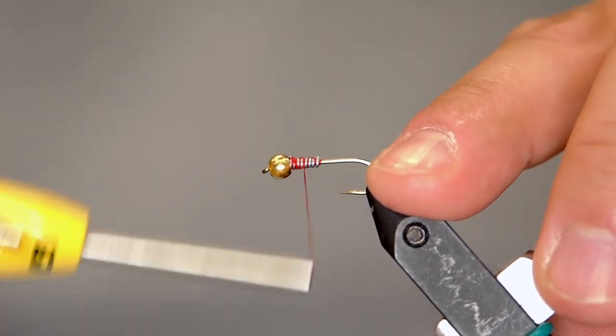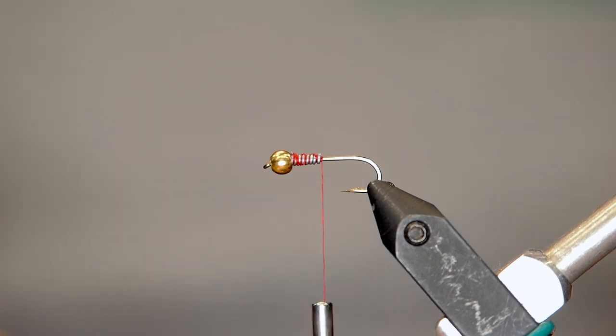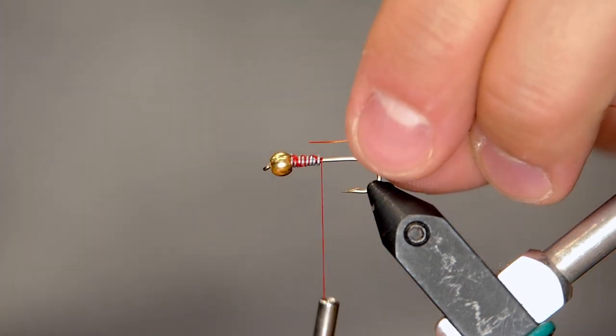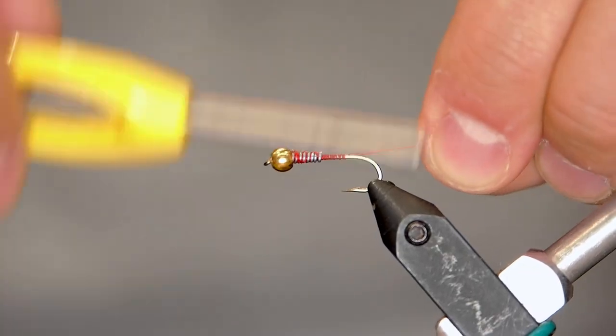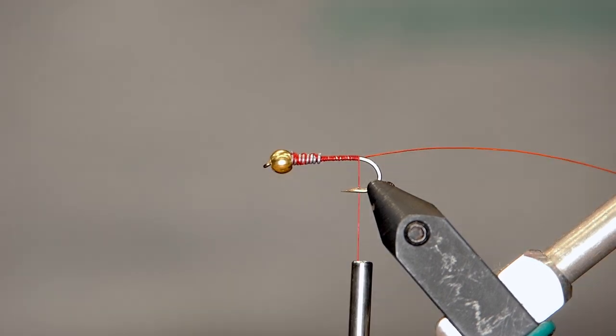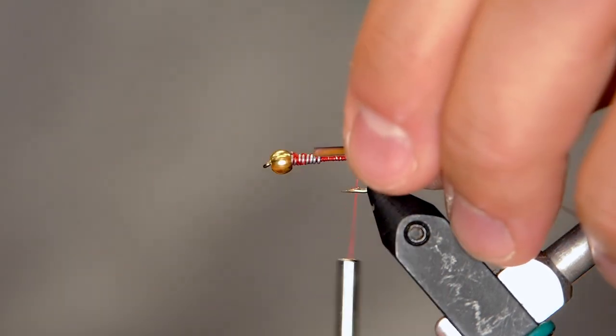I'm going to cover that lead in thread wraps and then we're going to put in our rib. Now, classically with a Prince Nymph you would use a gold rib and that is absolutely still a good choice. Today I'm going to do like a red, kind of hot orange. Just make sure it's a small wire for most nymph sizes. We're going to tie that right to the curve of the hook.